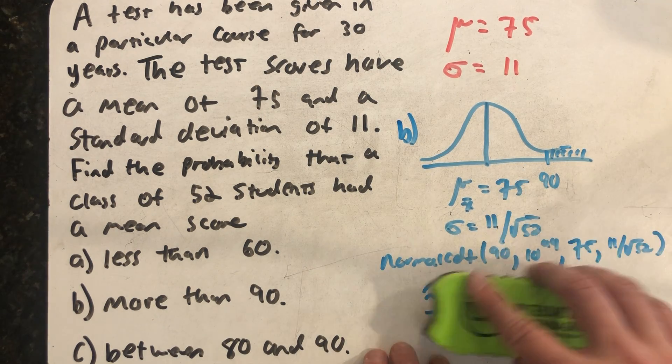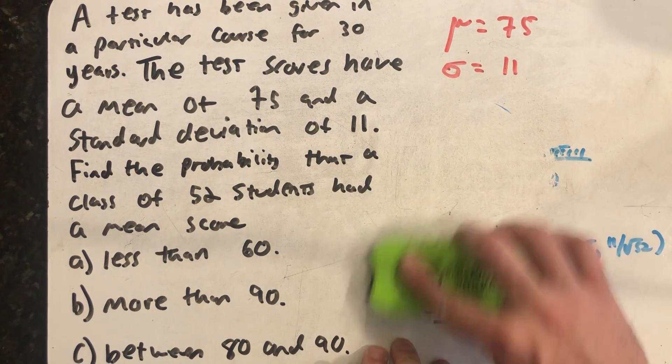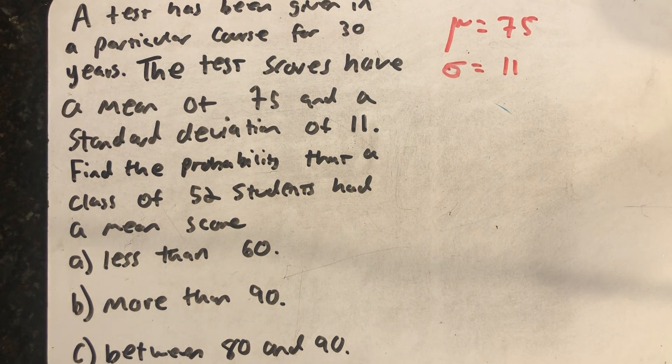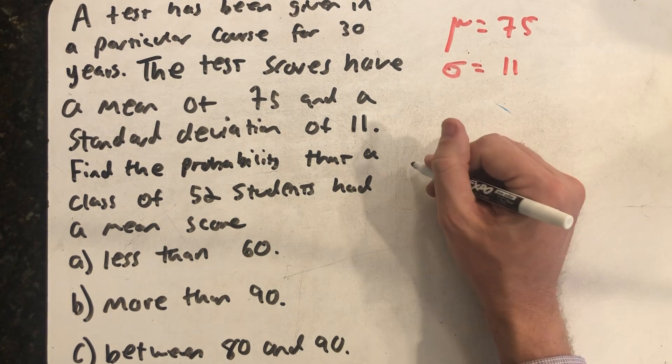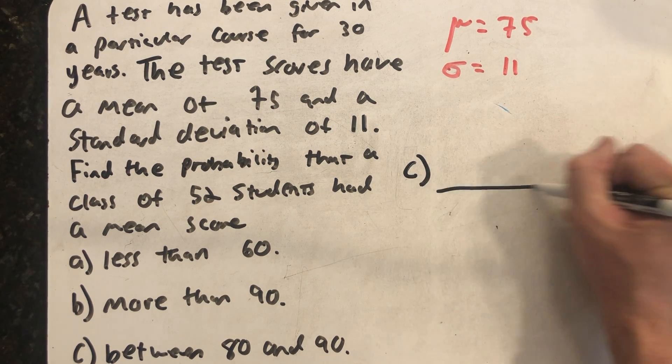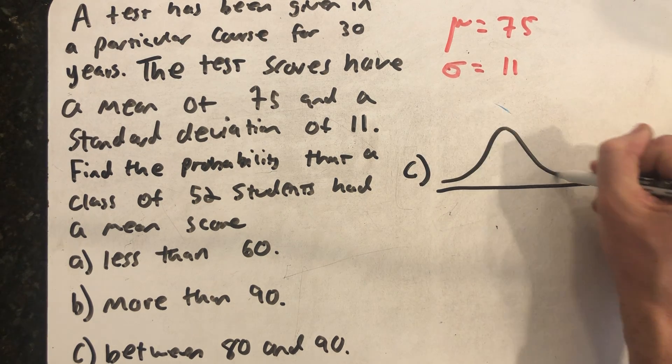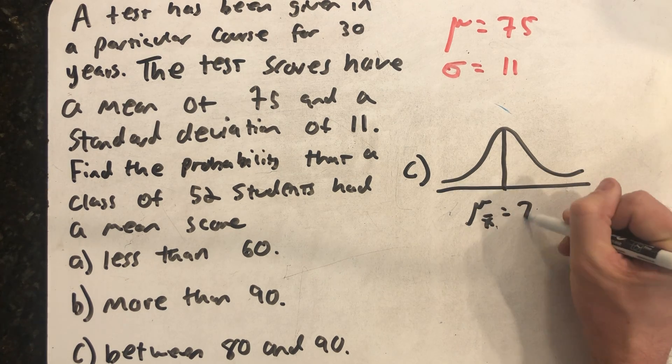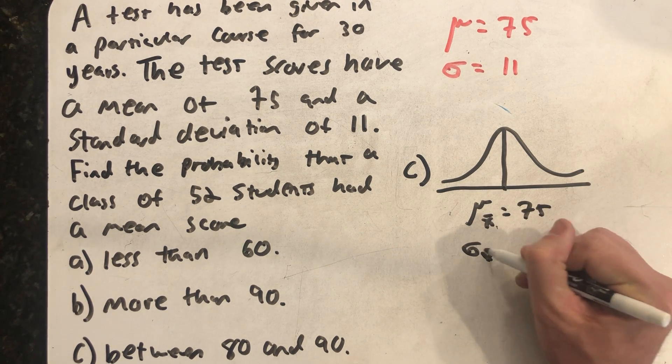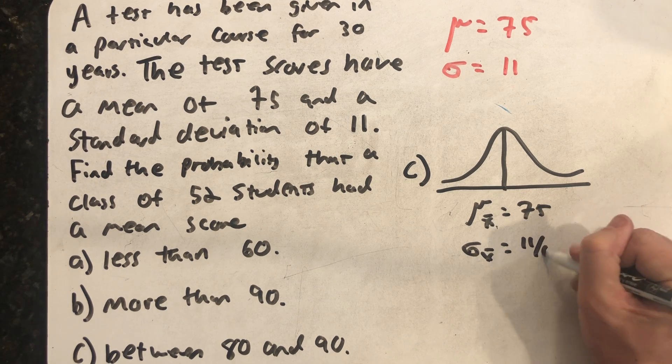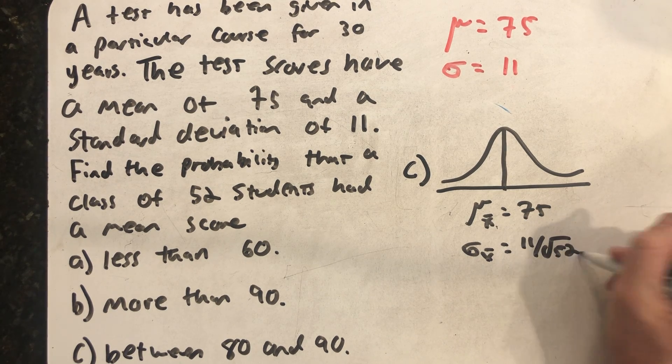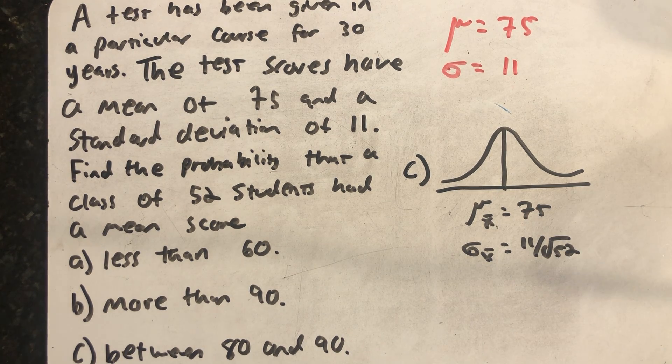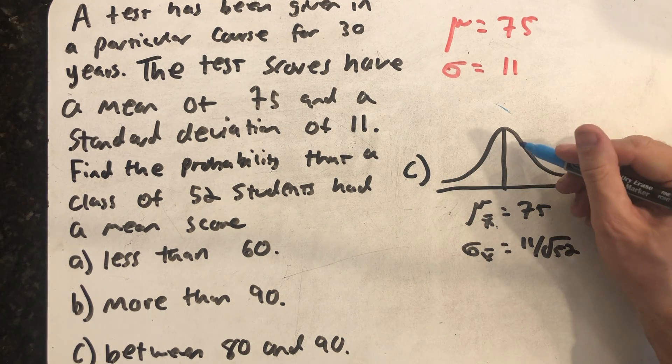And then part C, probability of scoring between an 80 and a 90. Same ideas apply. Still using the central limit theorem. Still have the same sample size, so I can still use the same ideas. Between 80 and 90.